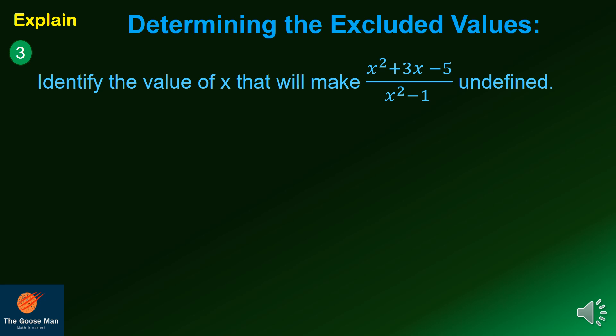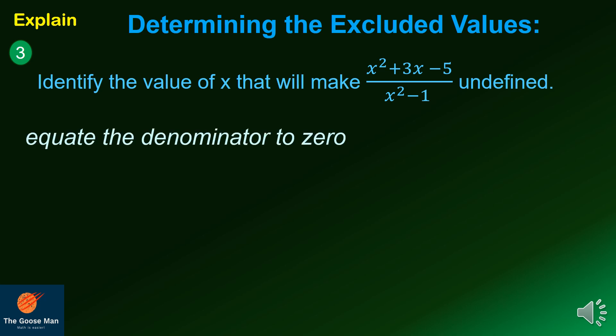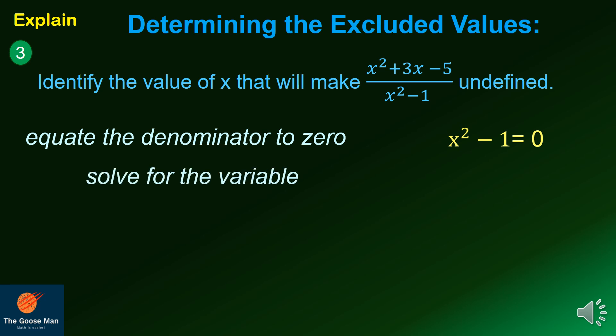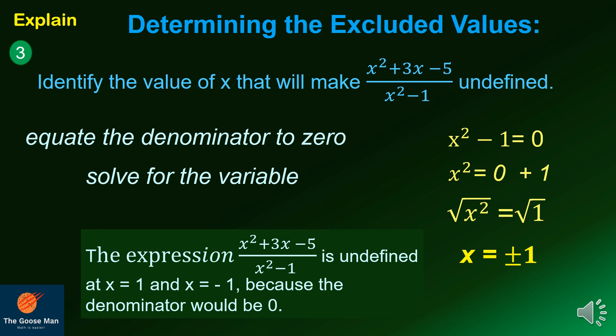Example number 3: identify the value of x that will make x squared plus 3x minus 5 all over x squared minus 1 undefined. Equate the denominator to zero: x squared minus 1 equals zero, so x squared equals 1. Taking the square root of both sides, x equals positive or negative 1. Therefore, the expression is undefined at x equals 1 and x equals negative 1 because the denominator will be zero.